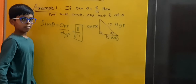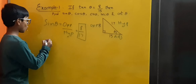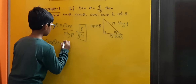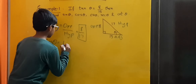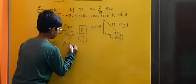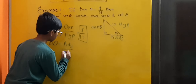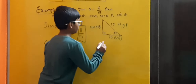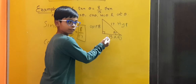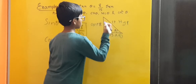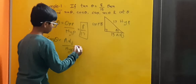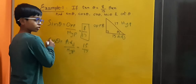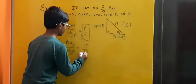Now let us find cos theta. We have the formula: cos theta is equal to adjacent by hypotenuse. Here, 15 is the adjacent and 17 is the hypotenuse, so we write 15 by 17. Therefore, cos theta is equal to 15 by 17.